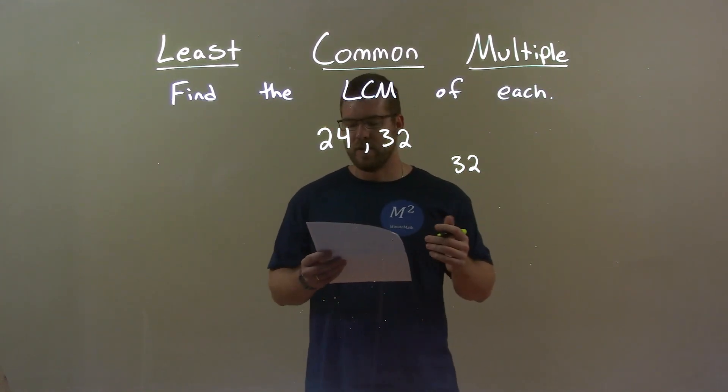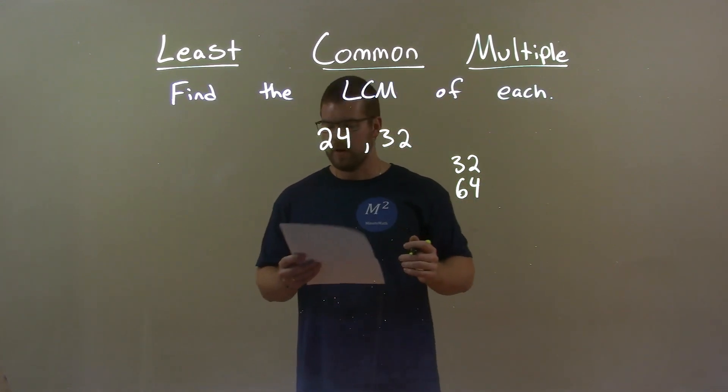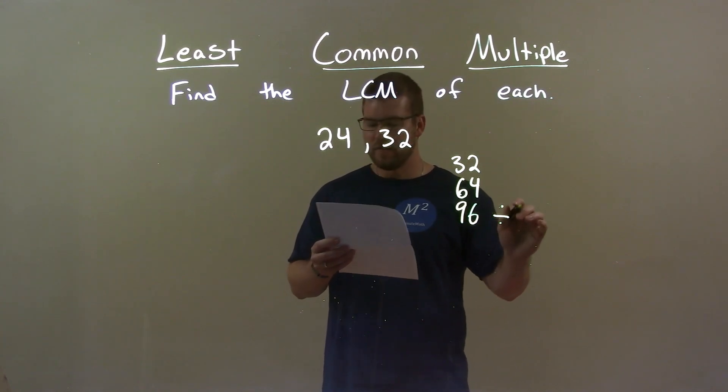32 cannot be divided by 24. The next multiple is 64. 64 cannot be divided by 24 evenly, so we have 96. Now, 96 can be divided by 24.